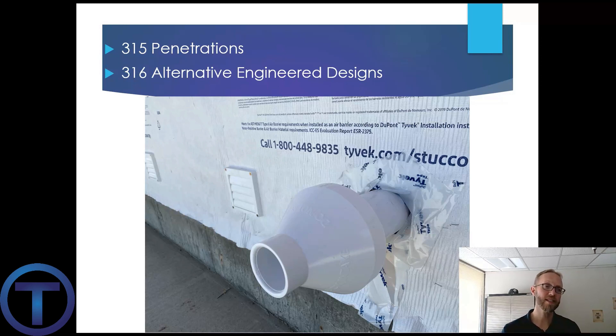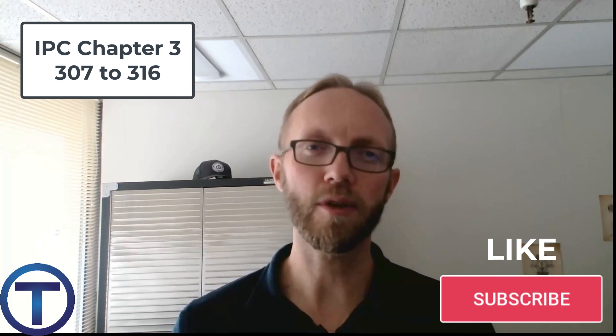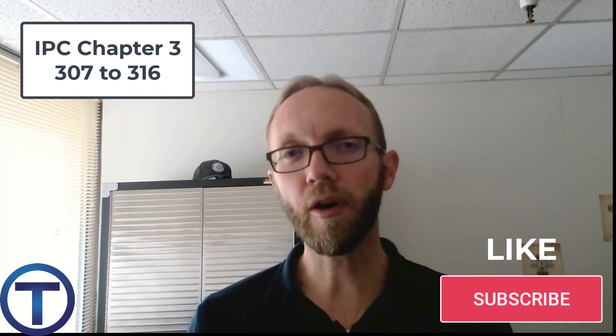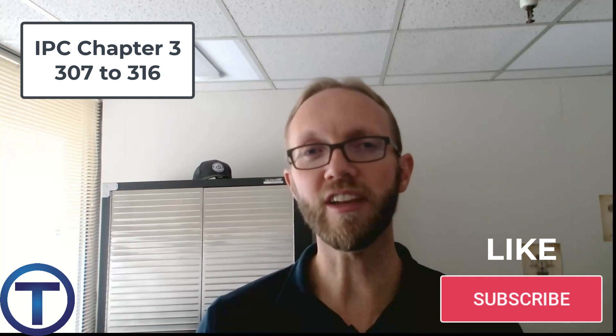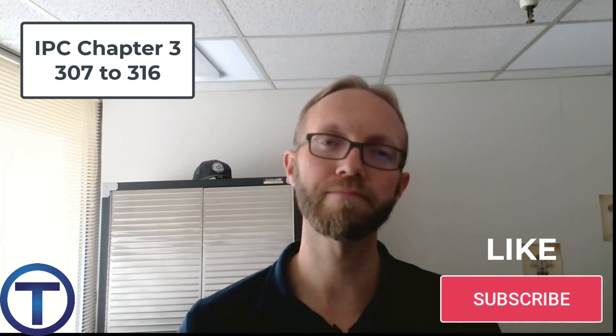Section 315 covers pipe penetrations and requires that the annular space around the pipe be sealed. Section 316 mentions alternative engineered designs — other approaches to putting things together that must be approved by a code official. Hopefully this presentation helps you understand IPC chapter 3 on general regulations. Apply these concepts in your daily work — when digging trenches, hanging hangers, drilling structure — and you will be a much better plumber.